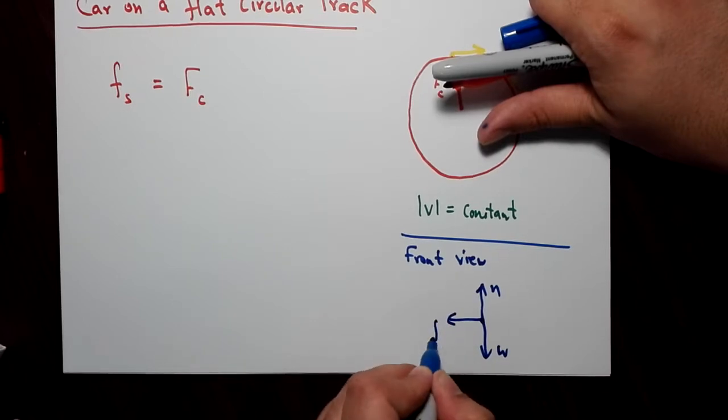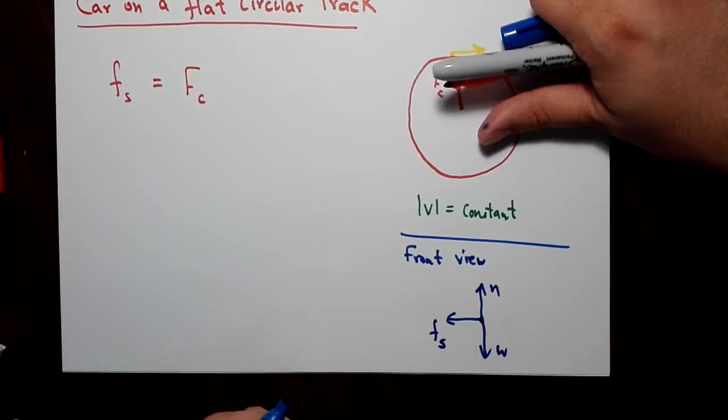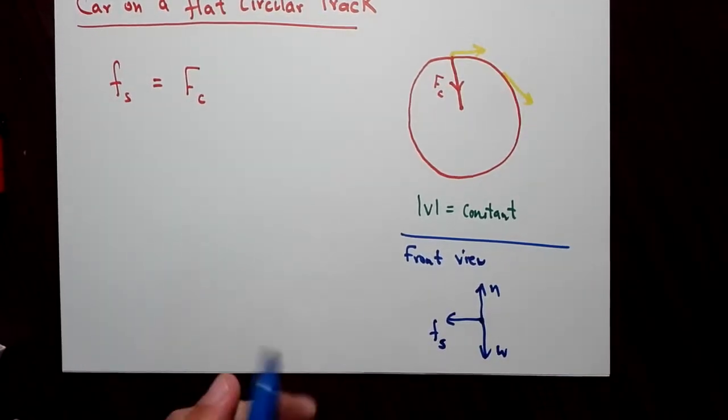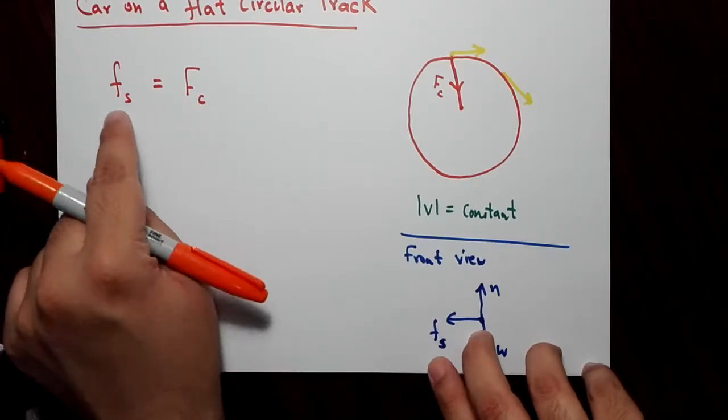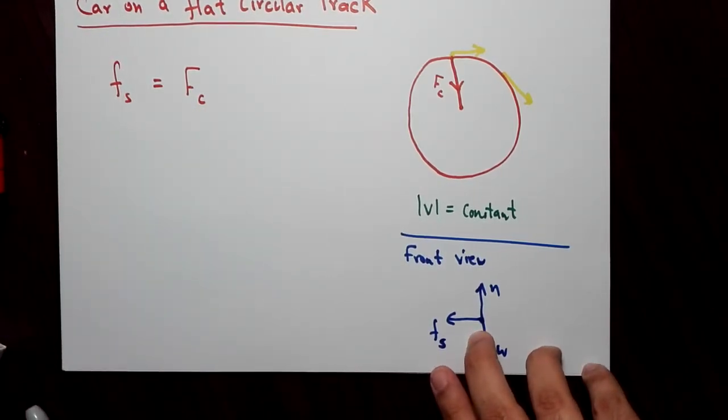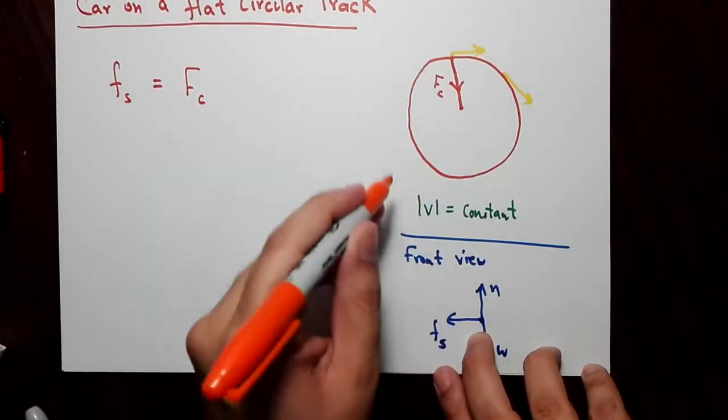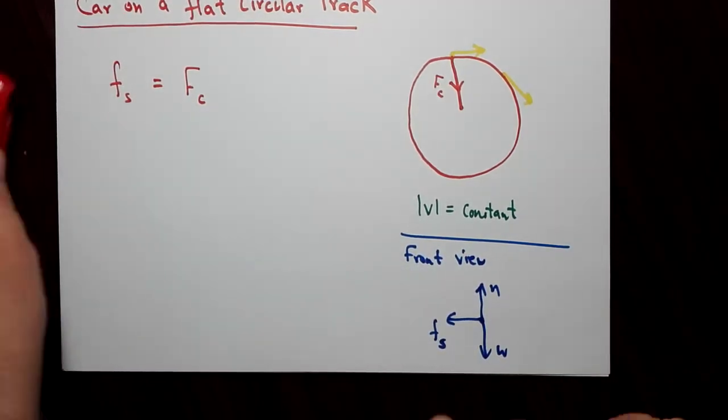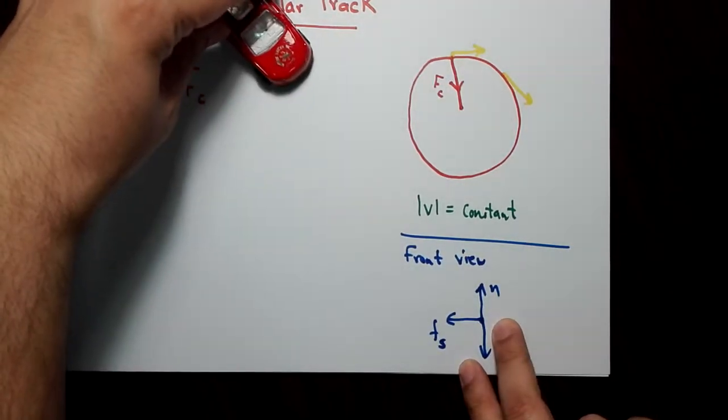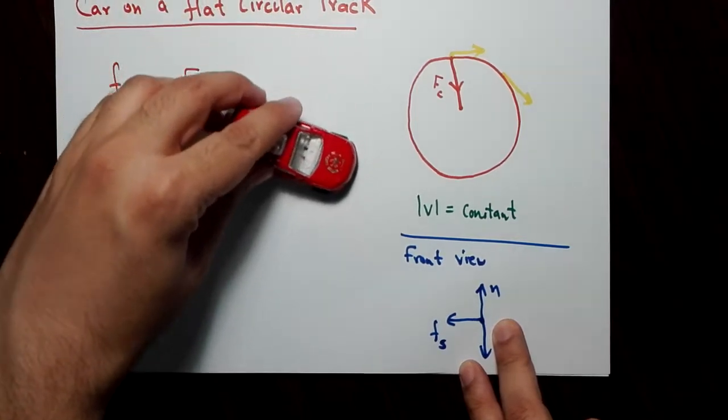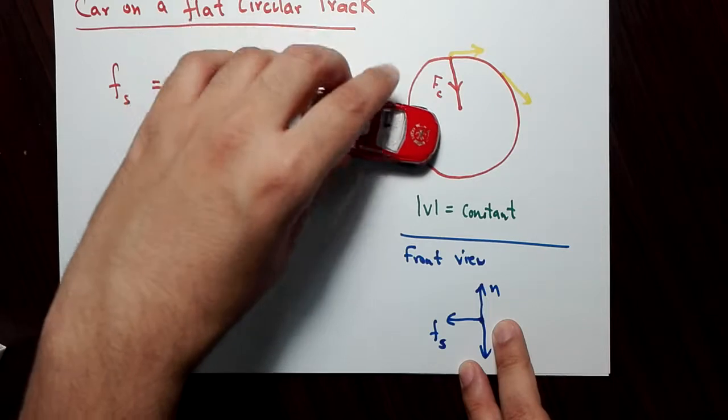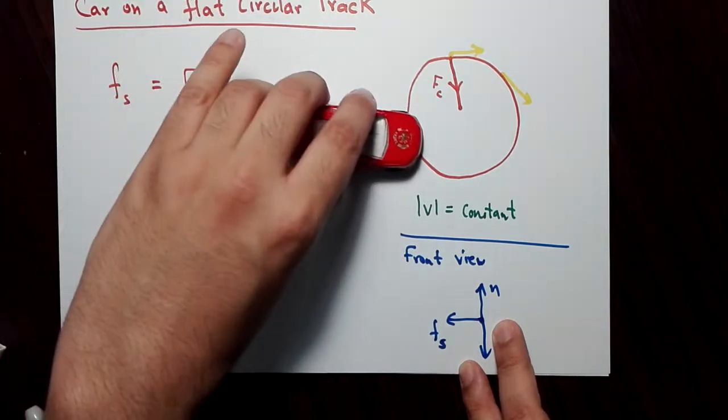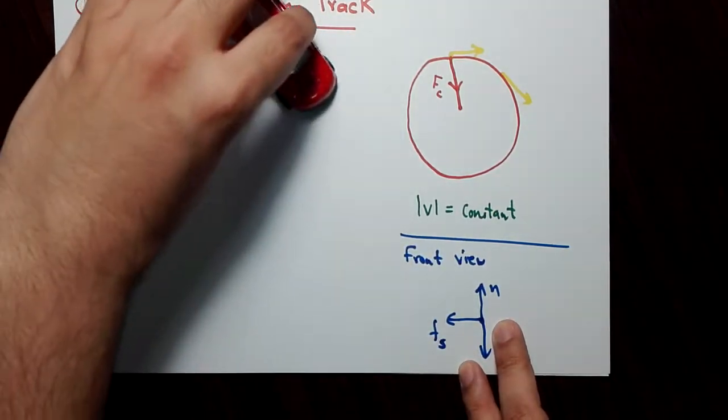and the force towards the center is static frictional force. Now when these questions are posed in books or in problems, you're typically asked to find the maximum speed of the car, the maximum speed so that the car can safely go around the circular track. So there is, of course, you know intuitively that if you turn around a corner really fast, your car can slip out of the track, right?